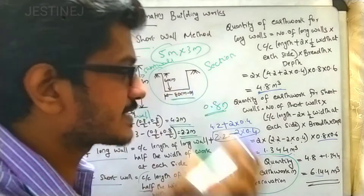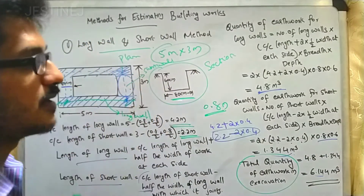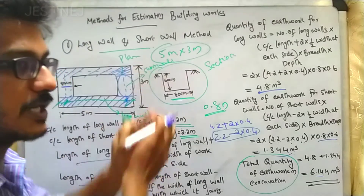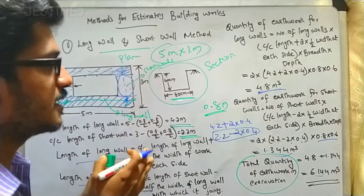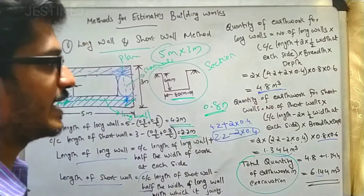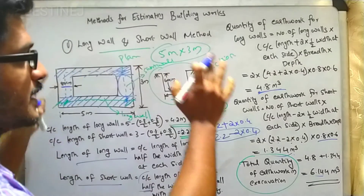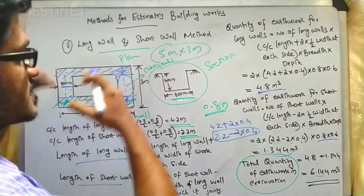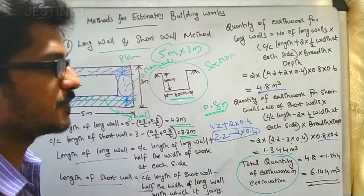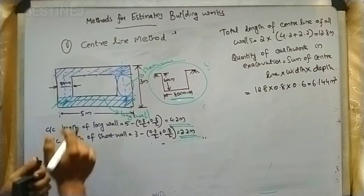From an exam point of view, you will be given a big plan related to a house along with sections related to the superstructure. You will have to organize everything into different columns and then calculate. First, make sure you study this concept of the long wall and short wall method thoroughly before moving on.